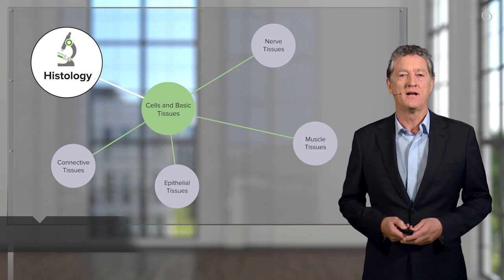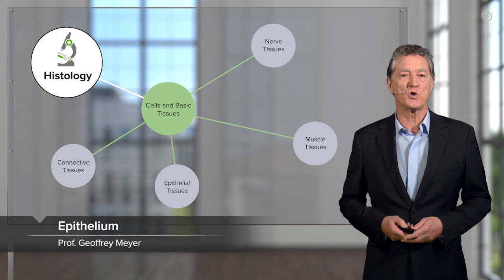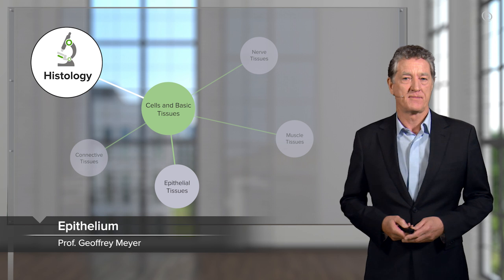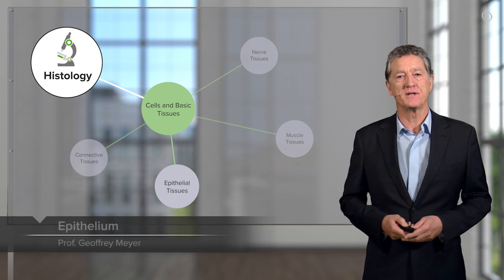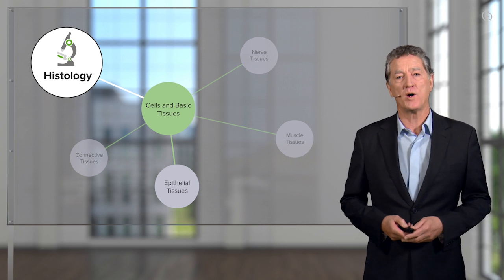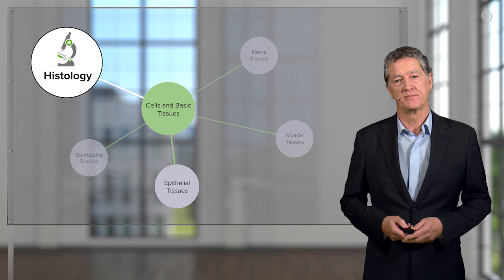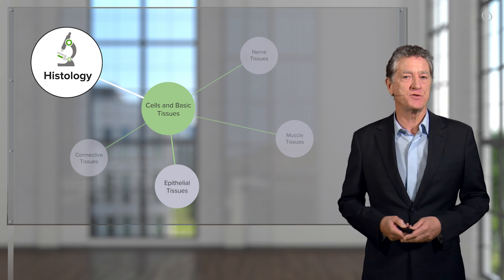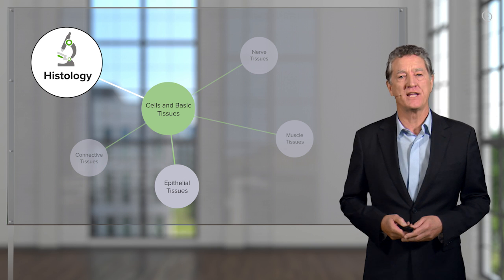In this lecture, I'm going to talk about epithelium. Epithelium is one of the four basic tissues of the body. The other three are connective tissues, muscle, and nerve.